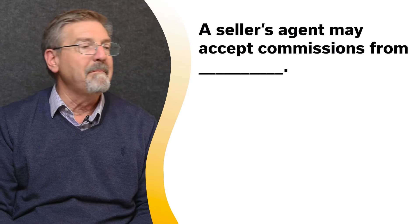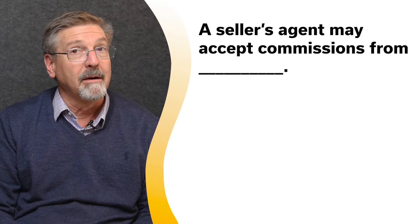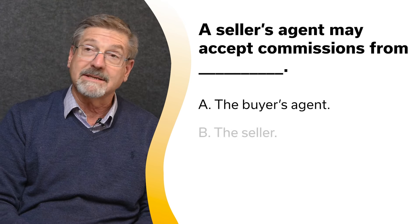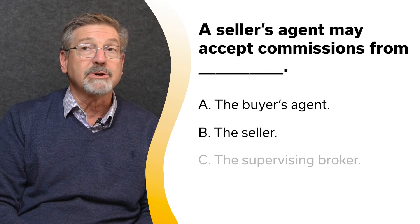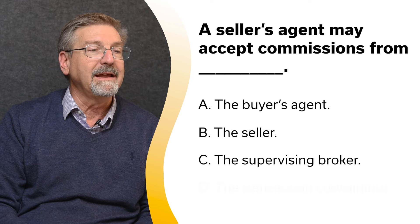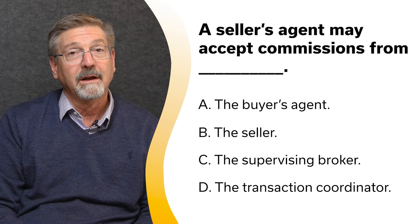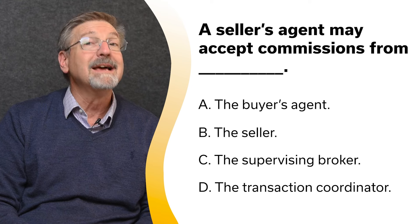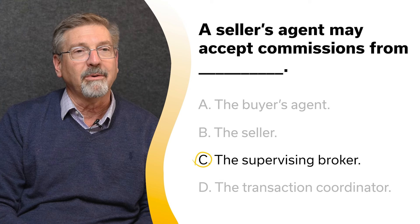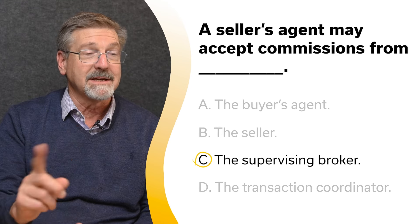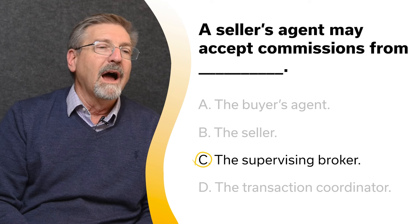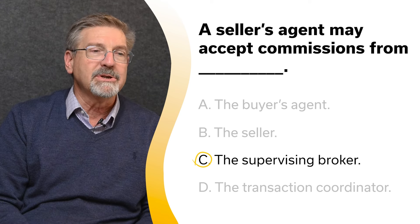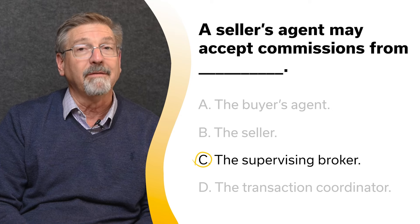A seller's agent may accept commissions from: A. The buyer's agent. B. The seller. C. The supervising broker. Or D. The transaction coordinator. The correct answer is C — the supervising broker. You might have thought it was the seller or the buyer's agent, but a seller's agent — or any licensee — may only accept commission payments from the supervising broker.